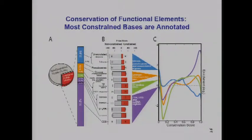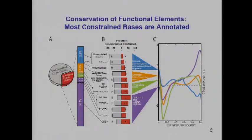We looked at the overall distribution of activity over the chromosome. About a third of the worm genome is under constraint. Of those constrained bases, many are in genes, but lots of others are accounted for by TF binding or punctate chromatin marks. Only about 20% is unaccounted for. Overall, we could account for most constrained bases in the worm genome in terms of some form of genomic activity.